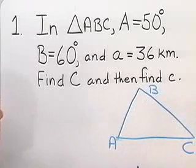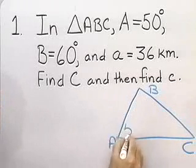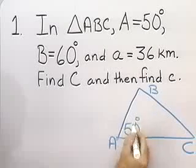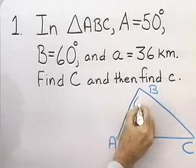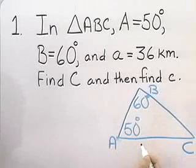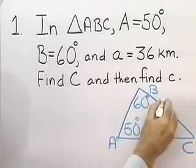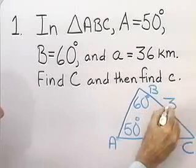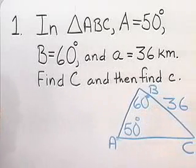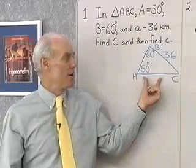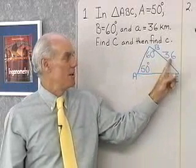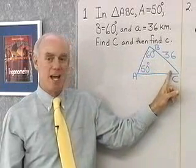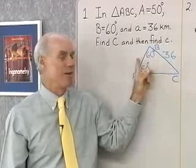angle B, and angle C. I know that angle A is 50 degrees, so I'm going to label this angle with 50 degrees. Angle B is 60 degrees, so I'm going to label that 60 degrees, and then side A is 36 kilometers, so I'll label this with 36. I have my triangle right here for reference, and I've labeled the information that I'm given.